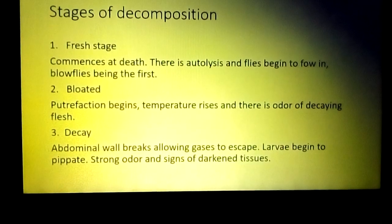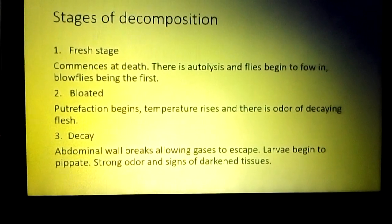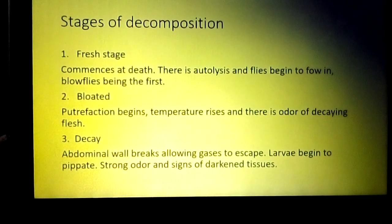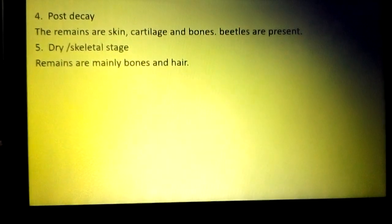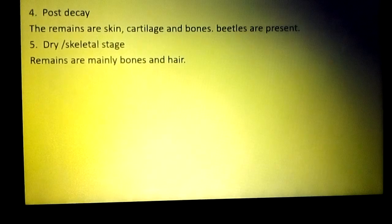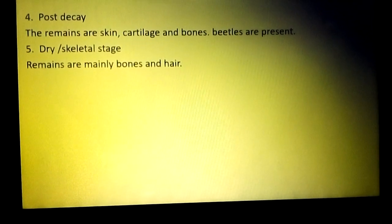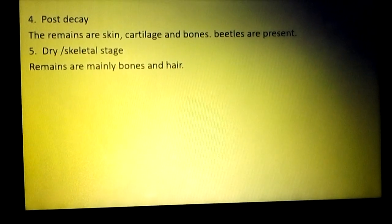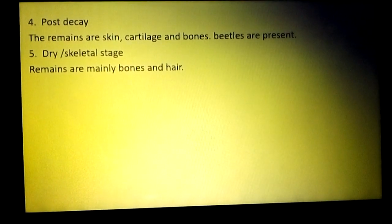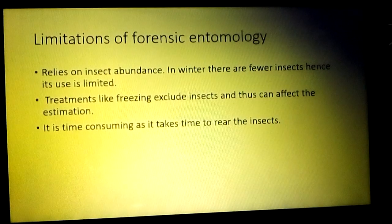The third stage is decay, where the abdominal wall breaks allowing gases to escape, so the carcass deflates. Larvae begin to pupate, and there are signs of darkening tissues. The decay stage occurs around five to eleven days after death. The fourth stage — post-decay — has remains consisting of skin, cartilage, and bones, and beetles appear, as they are attracted to dry areas unlike flies which prefer moist areas. The fifth and final stage is the dry or skeletal stage, where remains are bones and hair, and hide beetles are replaced by nerve beetles.